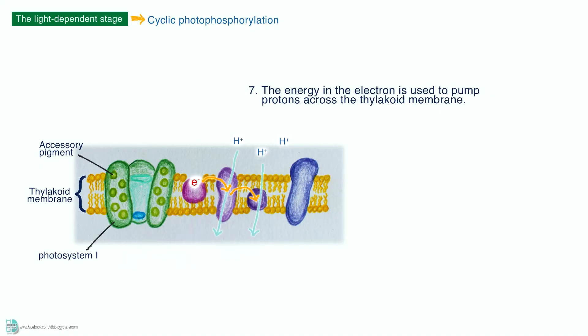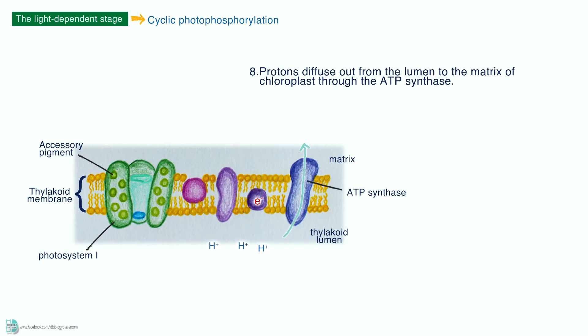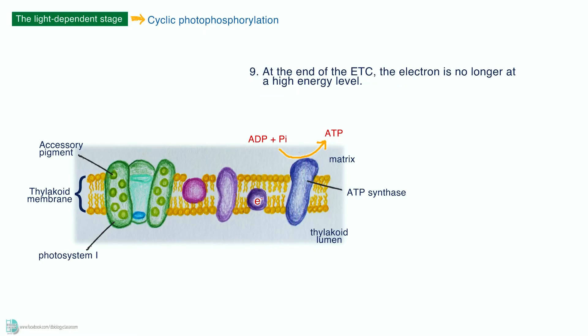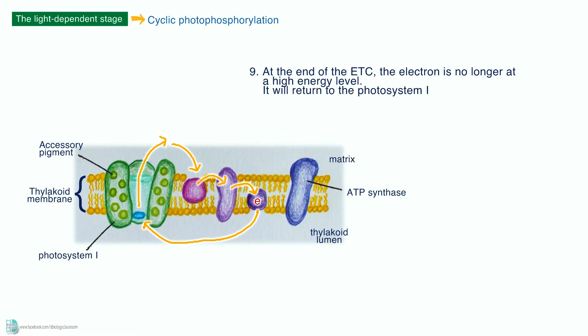The energy in the electron is used to pump protons across the thylakoid membrane. As protons diffuse out from the lumen to the matrix of chloroplasts through the ATP synthase, ATP is produced by chemiosmosis, just like how it happens in the mitochondrion during oxidative phosphorylation. At the end of the ETC, the electron is no longer at a high energy level. It will return to photosystem I. The movement of the electron in a cycle is the reason why we call this cyclic photophosphorylation.